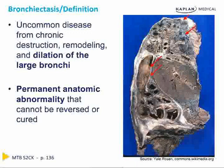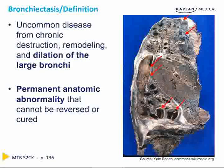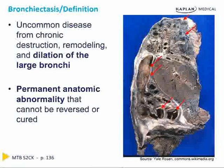This is a picture of a diseased lung with bronchiectasis. As you can see, the large airways are extremely dilated — this is a result of chronic destruction and remodeling of these airways into larger and less effective bronchi.